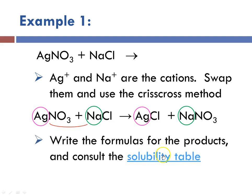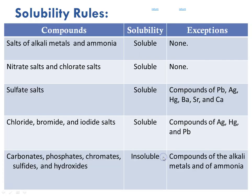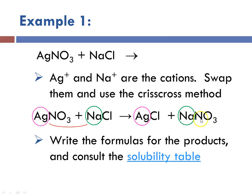Now that we've written the formulas, we need to consult our solubility table. According to the solubility table, silver chloride falls under chloride salts, which are in general soluble — with the exception of silver, mercury, and lead. So silver chloride is not soluble. Also, solubility rule 1 states that all nitrate salts are soluble with no exceptions. So now we know that silver chloride is our precipitate.